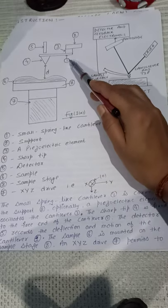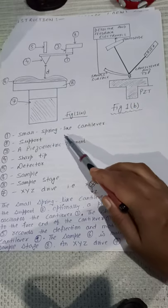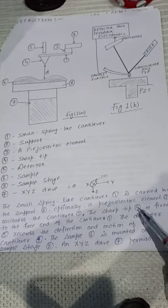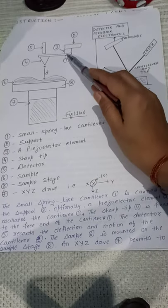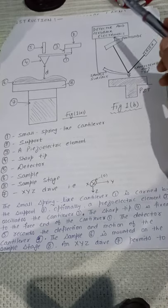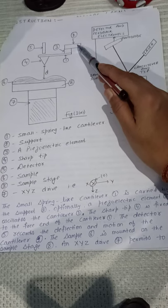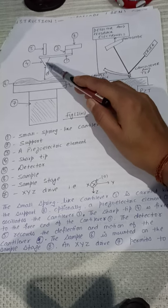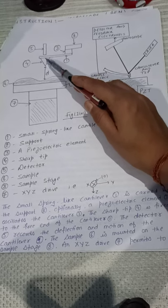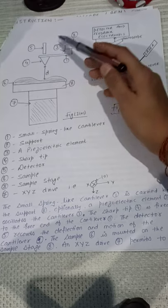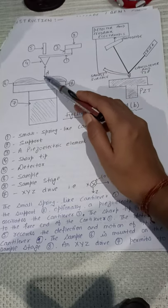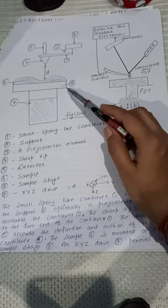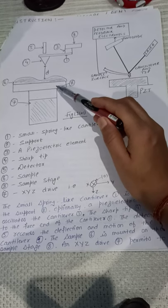Number 1 is a small spring-like cantilever, 2 is support, 3 is piezoelectric element, 4 is the sharp tip, 5 is detector, 6 is sample, 7 is XYZ drive, and 8 is sample stage.